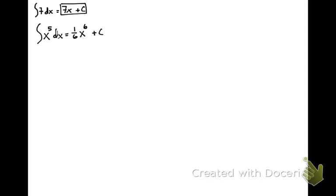Go ahead and try example 3 yourself. We're looking to integrate x to the 12th dx. That must have come from something x to the 13th, so it would have been (1/13)x to the 13th plus c. I'm just reversing the power rule.